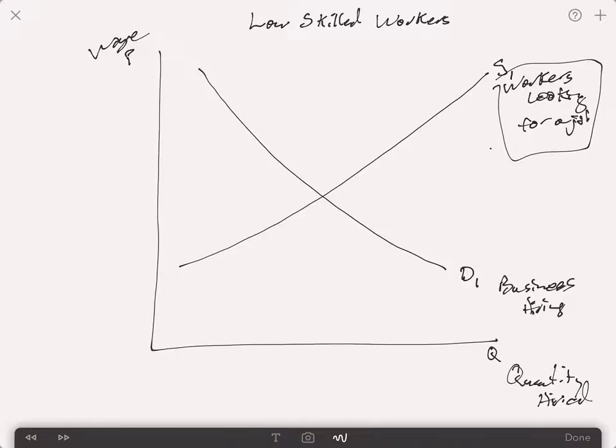Now, the minimum price may be set at a point that is below the current market equilibrium, in which case the price floor has no effect on the market. You'll see here that this line representing the price floor is actually below the current market equilibrium. So the price will actually be higher than that.